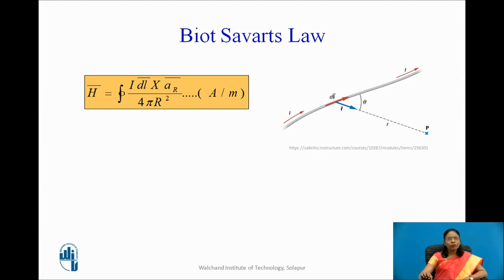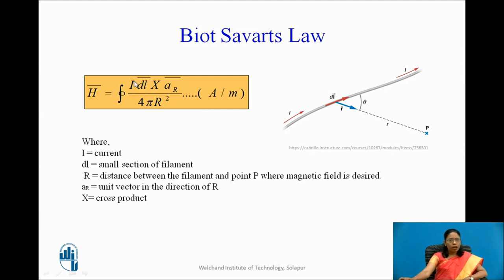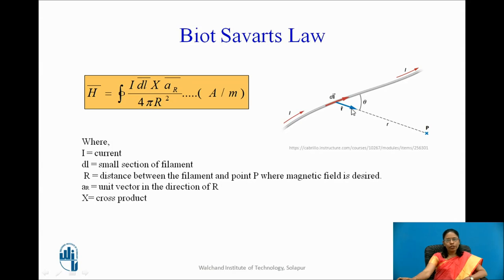The terms in Biot-Savart's Law: I is current; dL is a small length or small section of the filament; R is the distance between the filament and point P, which is the point where we want to find the magnetic field intensity; and AR is the unit vector in the direction of R. The symbol in between is a cross product, not simple multiplication.